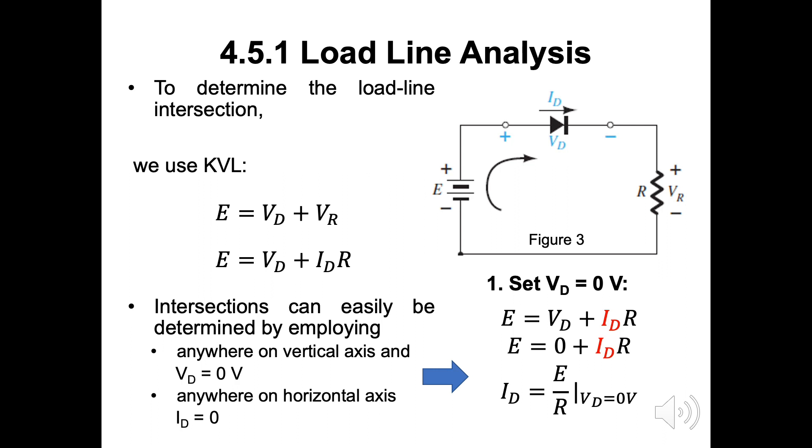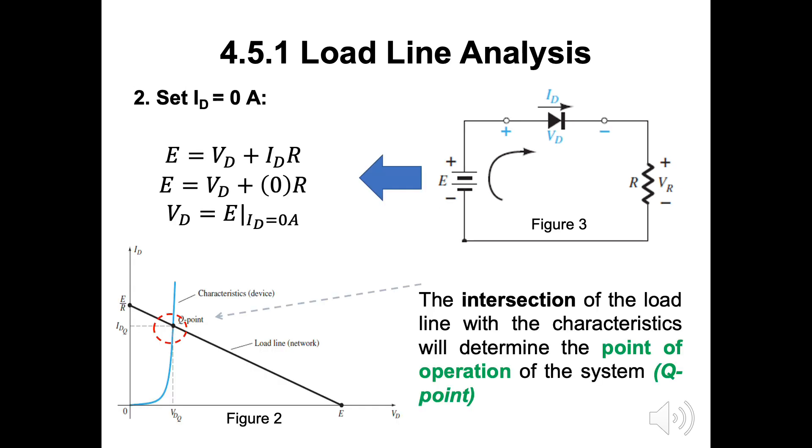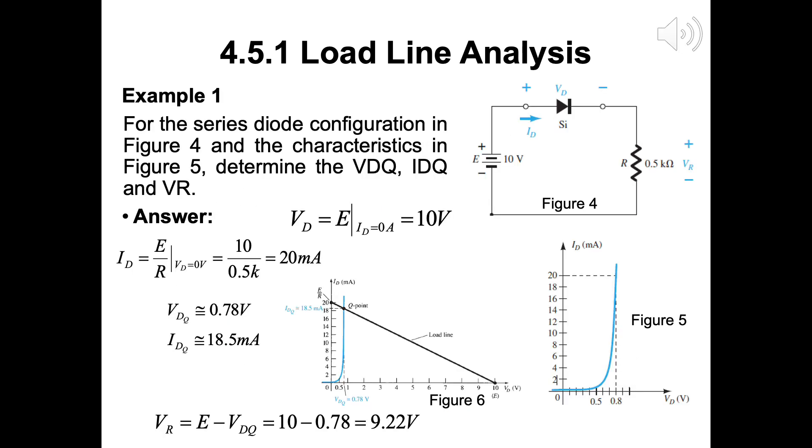For horizontal axis, set the ID to 0A. Still applying the same KVL for the circuit as in figure 3. We will have E is equal to VD plus ID R. Finally, substituting the 0 current will result the VD equal to E.